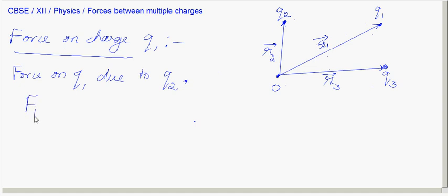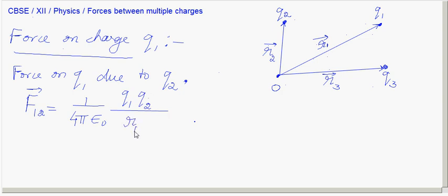The force on Q1 due to Q2, call it F12, is given by Coulomb's law: F12 = (1 / 4πε₀) × (Q1·Q2 / R12²) × R̂12, where R̂12 is the unit vector along R12, the distance between charges 1 and 2.